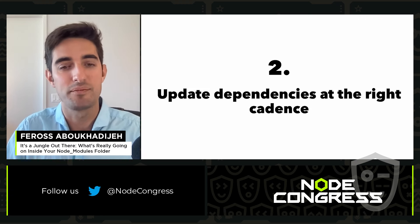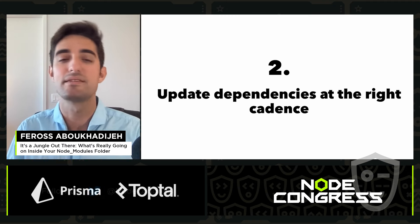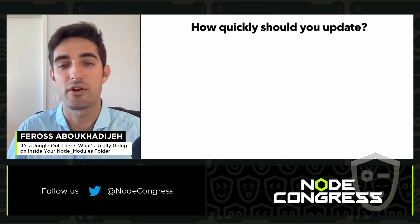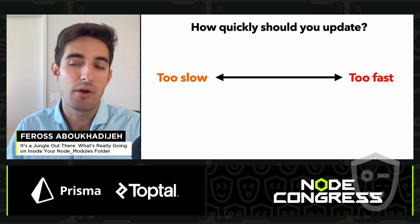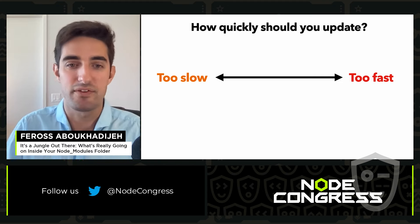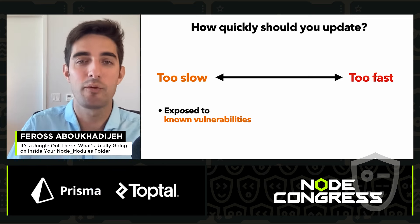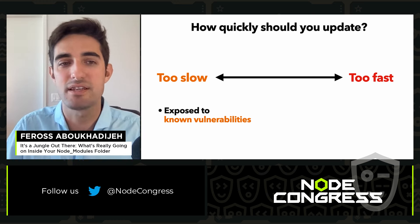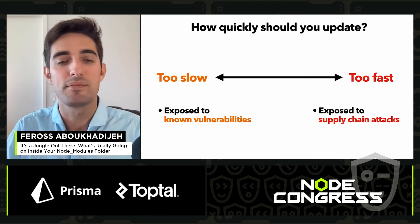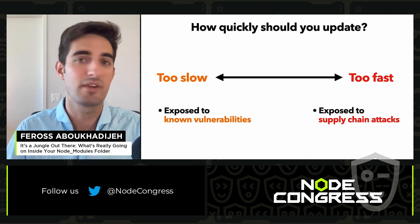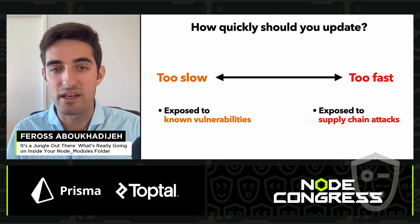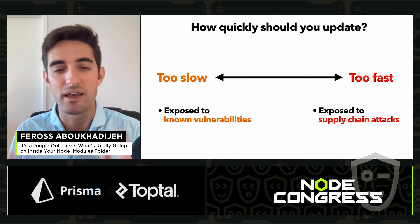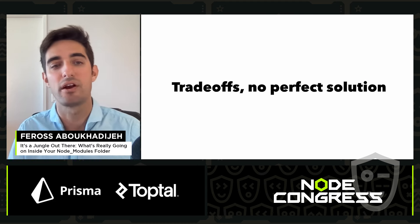Another thing you can do is think about updating your dependencies at the right cadence. If you update too slowly, you're exposed to known vulnerabilities and running old code with unfixed bugs. On the other hand, if you update too quickly, you expose yourself to supply chain attacks because you're running code published literally yesterday, which means fewer eyeballs have had a chance to look at it. There really is no perfect solution — it's just a hard problem and a difficult tradeoff.